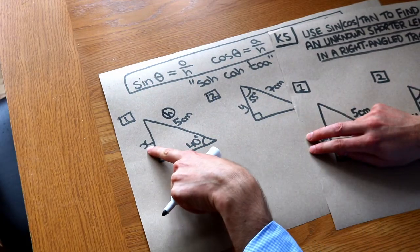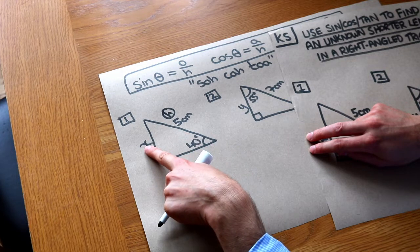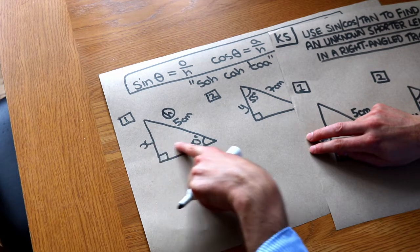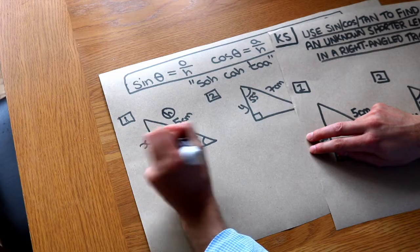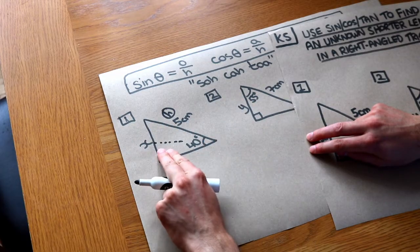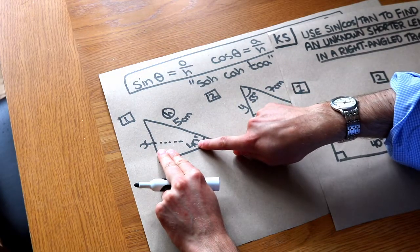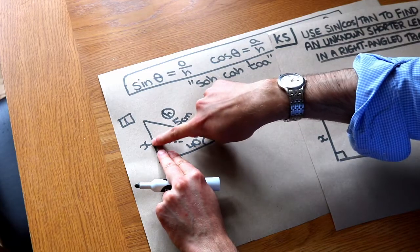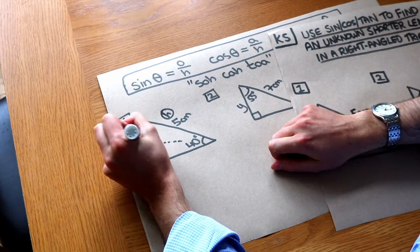And what's the other side we've got here? Well, we've labeled this side here with the X. Now this side here is opposite that angle of 40 degrees. Remember, ignoring the right angle we look at this other angle that's specified. Opposite it you can see we've got this side here. So that's known as the opposite.